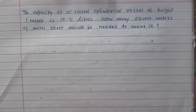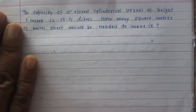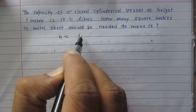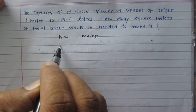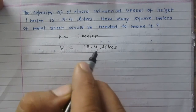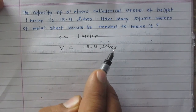The capacity of a closed cylindrical vessel of height 1 meter is 15.4 liters. How many square meters of metal sheet would be needed to make it? We are given a cylindrical vessel with height H = 1 meter. The capacity, or volume, of the cylinder is 15.4 liters. Height is given in meters and volume is in liters.